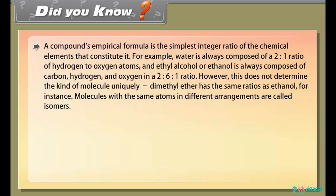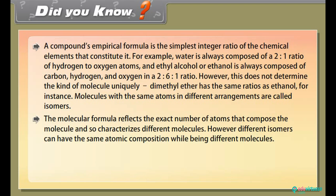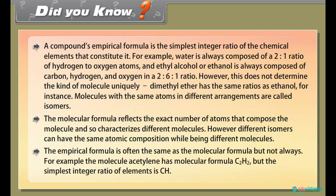Dimethyl ether has the same ratio as ethanol, for instance. Molecules with the same atoms in different arrangements are called isomers. The molecular formula reflects the exact number of atoms that compose the molecule and so characterizes different molecules. However, different isomers can have the same atomic composition while being different molecules. The empirical formula is often the same as the molecular formula but not always. For example, the molecule acetylene has molecular formula C2H2, but the simplest integer ratio of elements is CH.